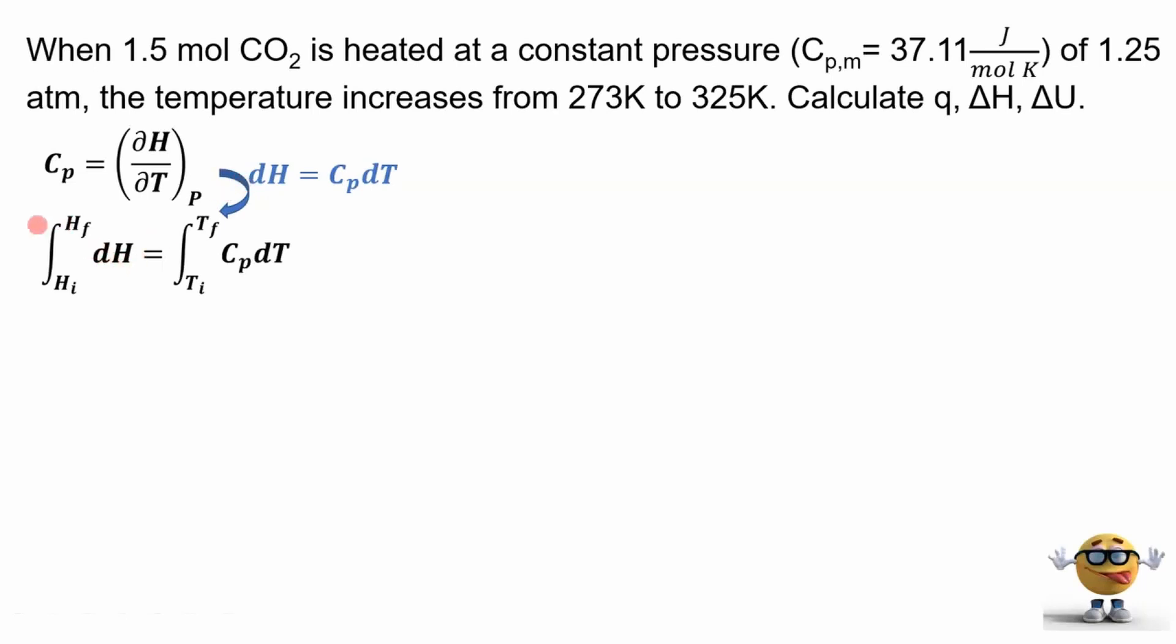And if we integrate both sides, we get the change in enthalpy on the left and the change in the temperature on the right, because the heat capacity doesn't depend on the temperature according to the data that we're given in the question. So the integral is just T from T final to T initial, so that's the change in T.